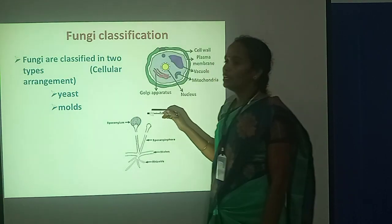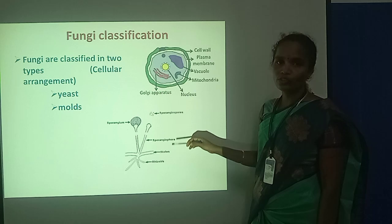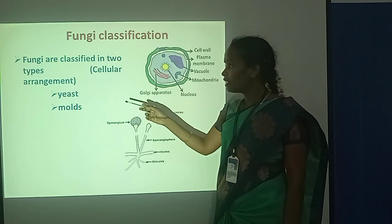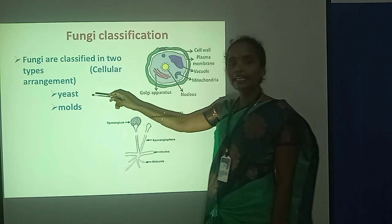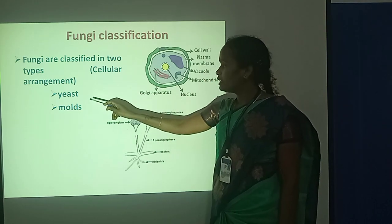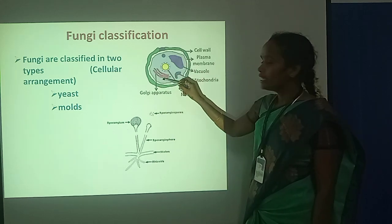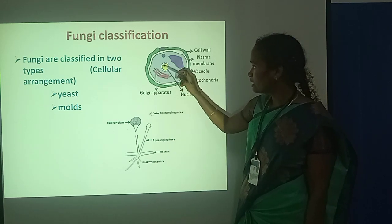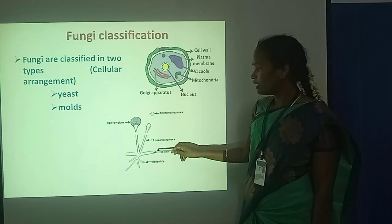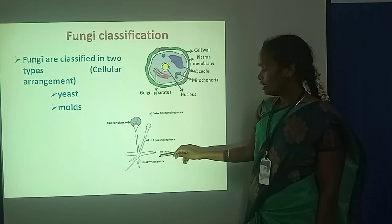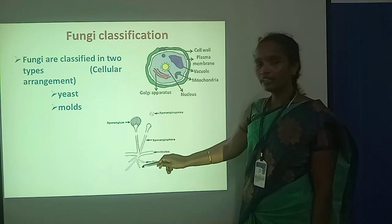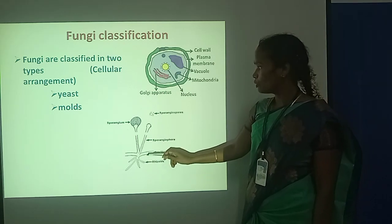Next, you can see the classification of fungi. Based on the cellular arrangement, the fungi have two types: one is the yeast fungi and another one is the mold fungi. This structure is a yeast fungi structure — here a true nucleus is formed. And in the mold fungi structure, hyphae or other structural organizations are observed.